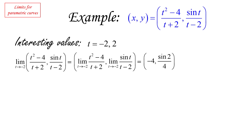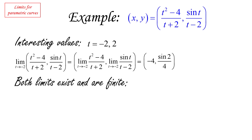Both limits are finite and both exist. We have a situation where the function itself is not defined — the curve doesn't exist at that point — but we can approach both the x and the y coordinate by letting t become as close to negative two as we want, and we end up with two actual numbers: negative four and sine(2)/4. That means we're dealing with a single point hole.